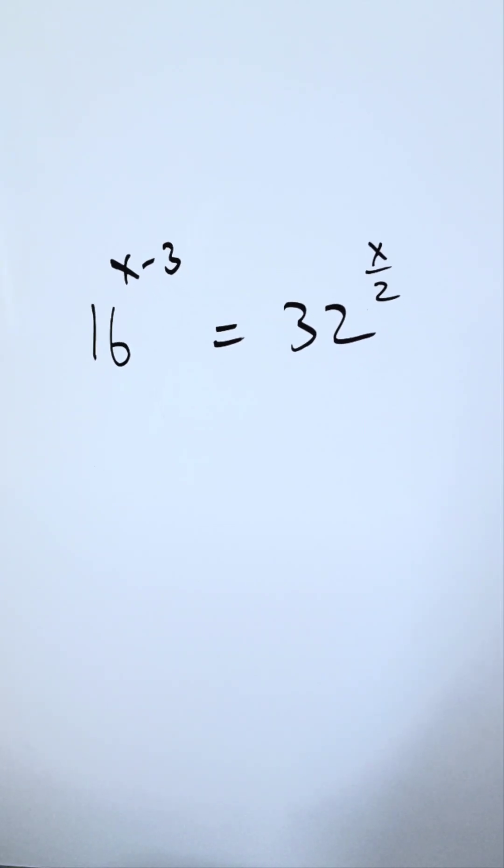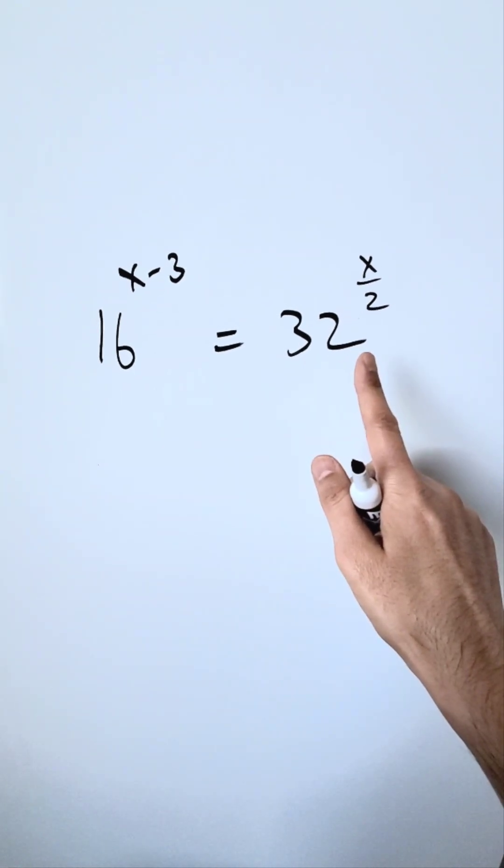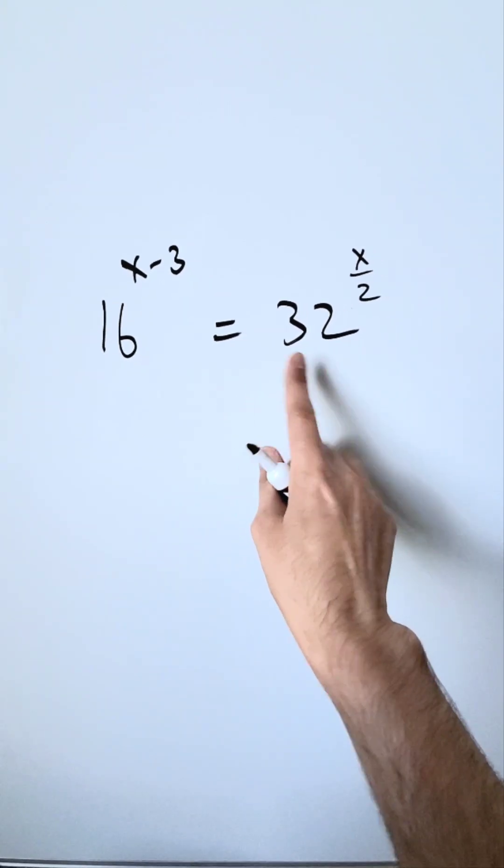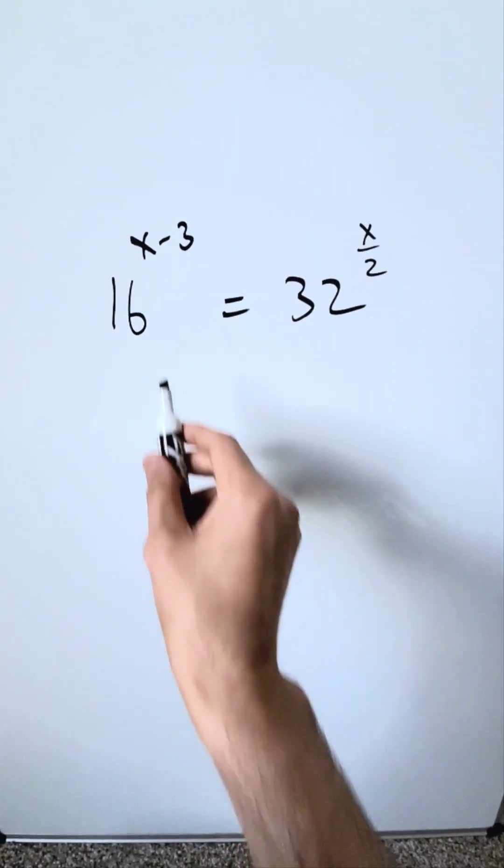Let's solve this. I'm looking here at 16 to the power of x minus 3 is equal to 32 to the power of x over 2. If you convert both 16 and 32 into the same base, you can easily solve this algebraically.